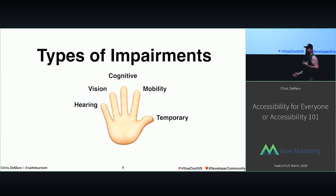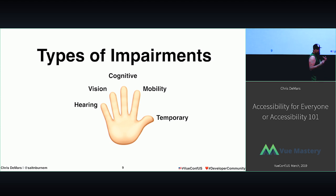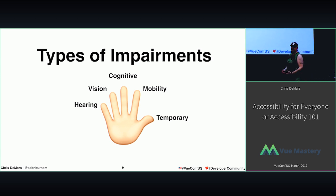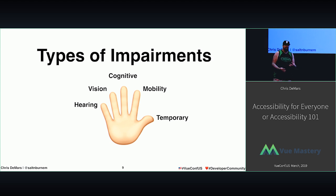And then we also have temporary impairments. Temporary is like a broken hand, a broken finger. But what about that single parent, that parent with a newborn child? How many have been in a situation like that where you've had to work? We've all been in situations where you have to use your machine but you can't put your child down. Your child will get older. But these are impairments at the time. So these are the five main things we think about.